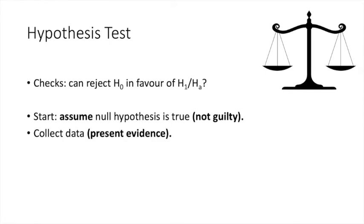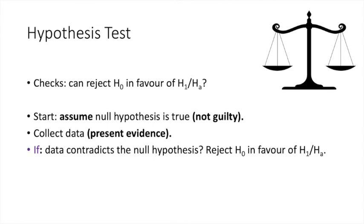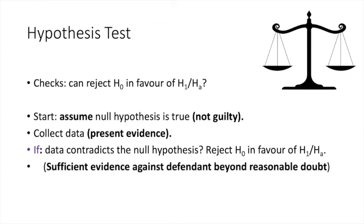Then the data is collected, or evidence is presented in the trial. If the data is inconsistent with, or contradicts, the null hypothesis, then we conclude that the null hypothesis is not true. We say that we reject the null hypothesis in favor of the alternative hypothesis. In legal terms, this means that if there is sufficient evidence beyond reasonable doubt against the defendant, then the innocence of the defendant is rejected, and he or she is declared guilty.